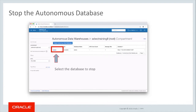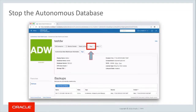To stop the database, select the appropriate database from the autonomous console — in this case, TestDW. This will place you in the control console for that specific database. Select the Stop button. This will place the database in Stopping status, and when the process is complete, the database will show as Stopped.